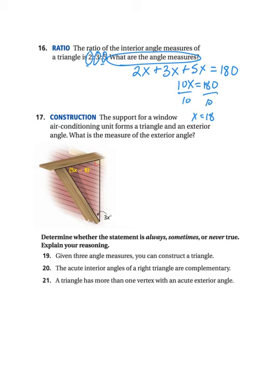All right, our next one, we have this construction project. The support for a window air conditioning unit forms this triangle and an exterior angle. So we see this little shelf here, and here is the exterior angle right here that we're talking about. So we need to figure out what is the measure of that particular exterior angle. So we know that the exterior angle adds up to these two interior angles, right, the 90 degree angle and 3x, but we don't know what 3x is, so that's not going to help us just yet.